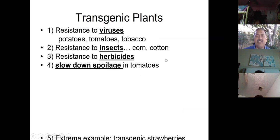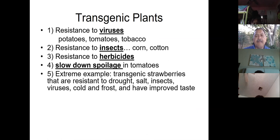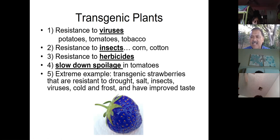But we can make them resistant to insects, but we can make the plants resistant and less desirable to some insects. Resistant to herbicides. You know, herbicides kill weeds, but sometimes the plants that we are interested in also die from herbicides. So with some genetic engineering, you can make those plants resistant to herbicides. Slow down spoilage and tomatoes. Here's a big, here's an extreme example. I don't know if you've seen these before. I've only seen them once at a farmer's market, but they now make transgenic strawberries that are resistant to drought, salt, insect, viruses, cold, frost, and they're super sweet. And some of them are purple. Have you seen these? It's pretty crazy.